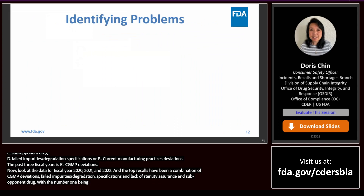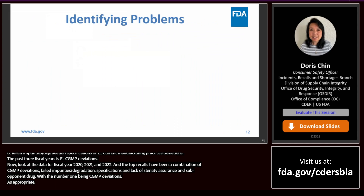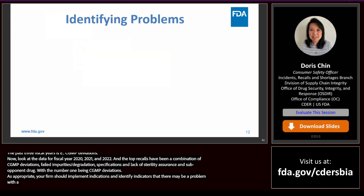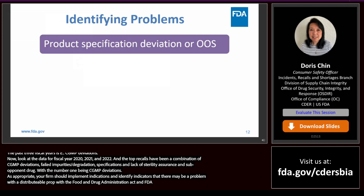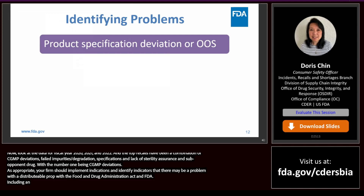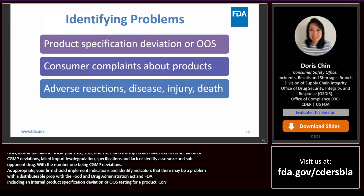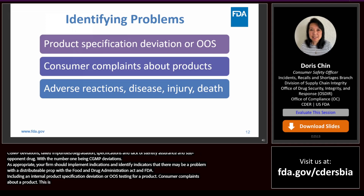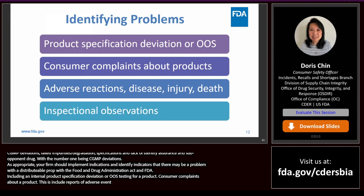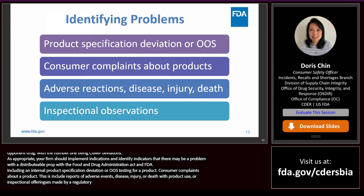Your firm should implement procedures to identify indicators that there may be a problem with a distributed product suggesting it is in violation of the Food, Drug, and Cosmetic Act. Examples of indicators include an internal report of a product specification deviation or out-of-specification testing results, consumer complaints including reports of adverse events, disease, injury, or death associated with product use, or inspectional observations by a regulatory authority indicating noncompliance.